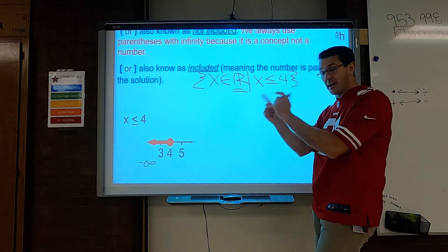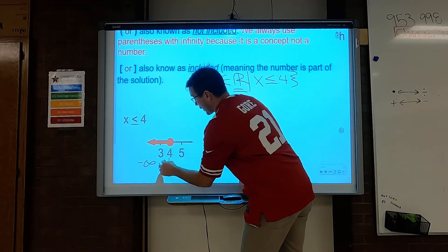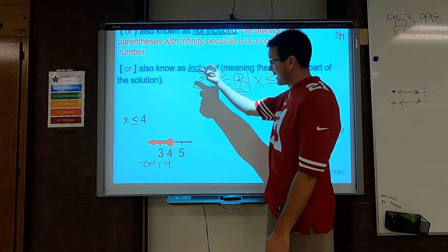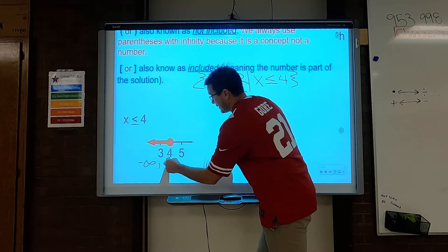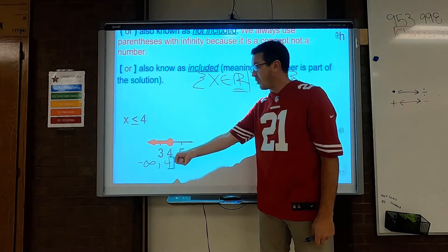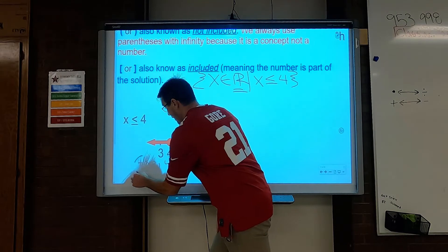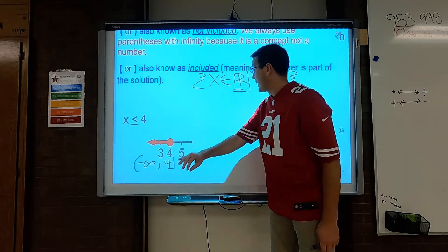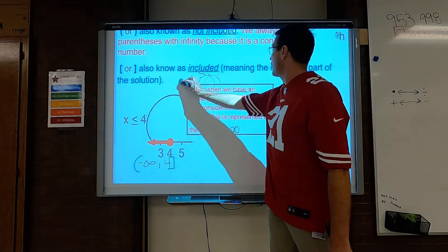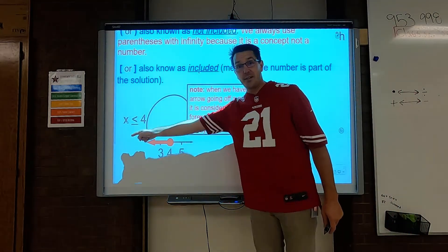The number we're talking about is 4. And we go and look at it — is 4 included? Yes, it's filled in. So when something's filled in, that means it's included. That means it gets a bracket. What about the negative infinity — do we put a bracket on that too? No. Because infinity is a concept. I cannot put it in my hand — it's an idea. So I just give it a parenthesis. And that is how we write it — way easier than writing the set builder version. Note: when you have an arrow going off the number line going to the left, it is represented by the symbol negative infinity.